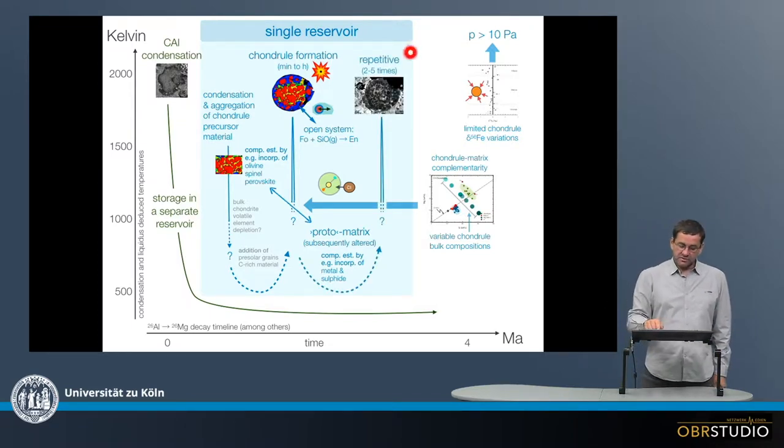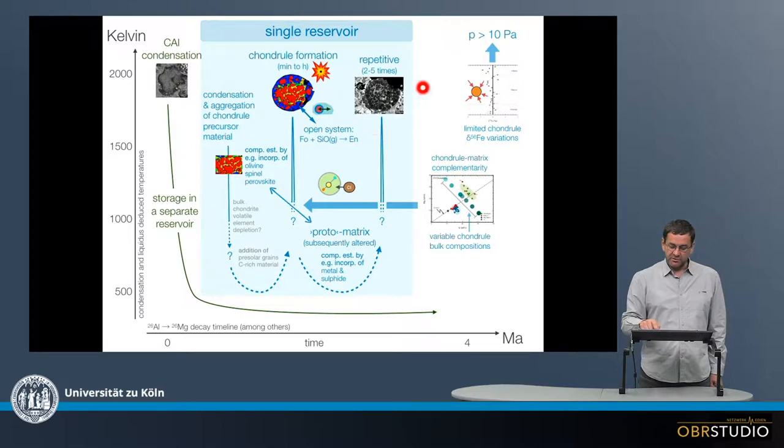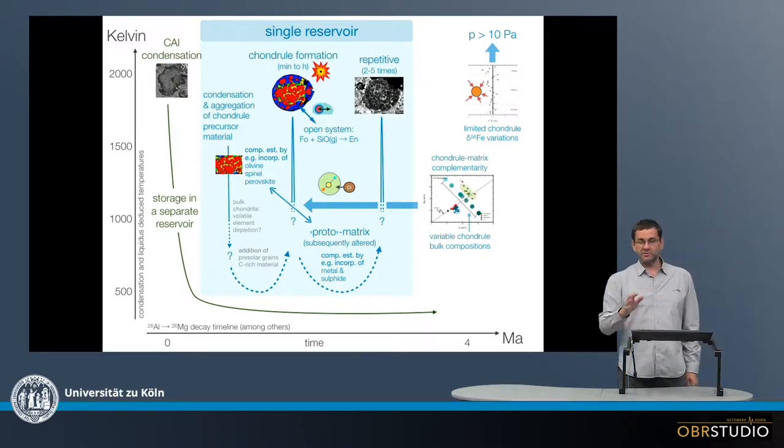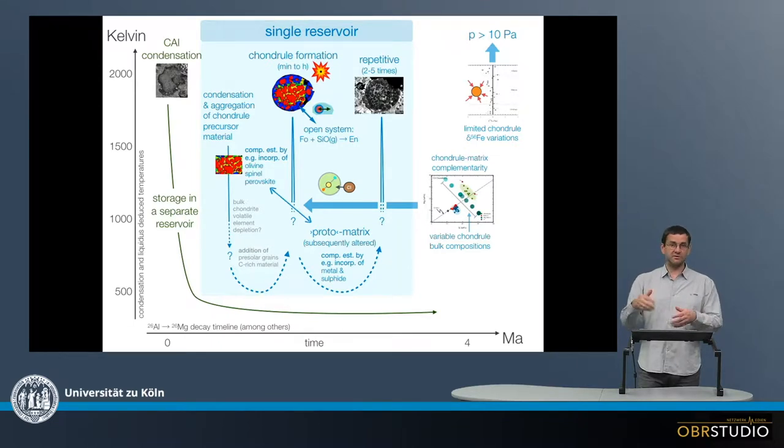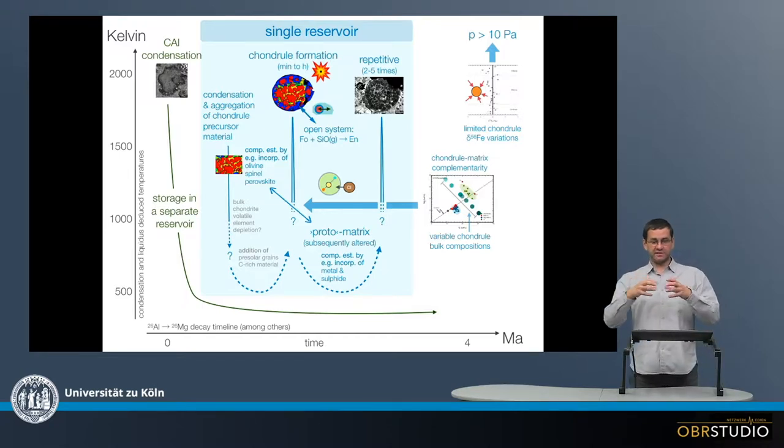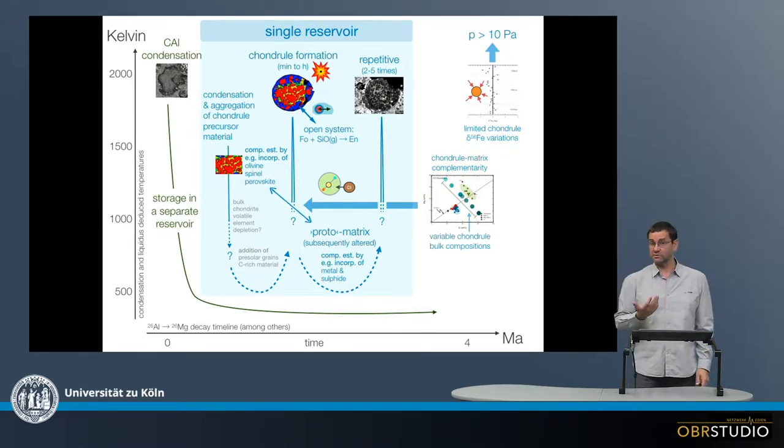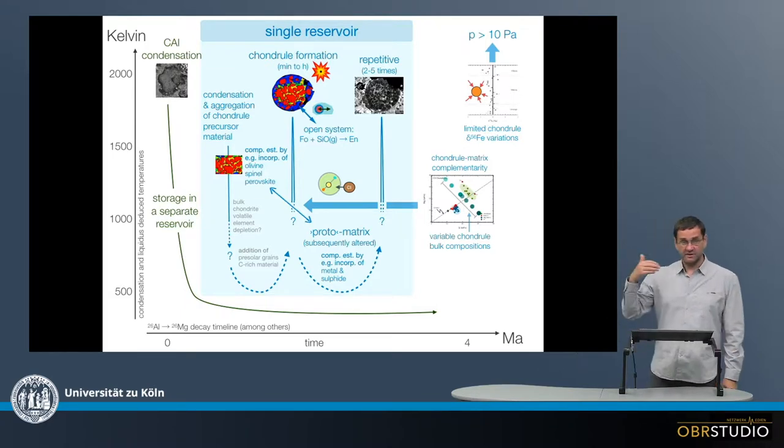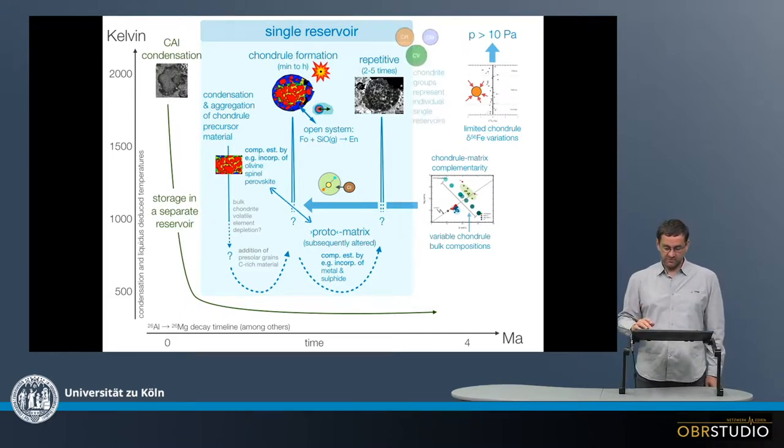And then this entire chondral formation process was repetitive, maybe two to five times. We know this because you find relic grains in chondrules, or other chondrules in chondrules, so it must have been repetitive. It cannot have been too repetitive, because if in each case chondrules disaggregate and are assembled together, then there should be a homogenization in the bulk chondral compositions, which we do not observe. And therefore this might have been something like two to five times the repetition in chondral formation.